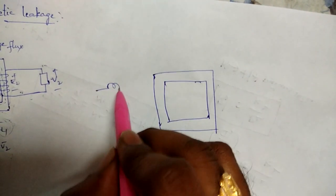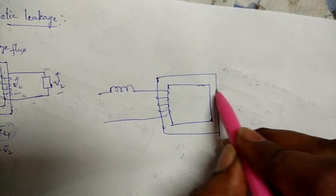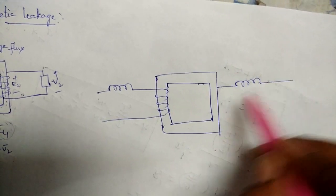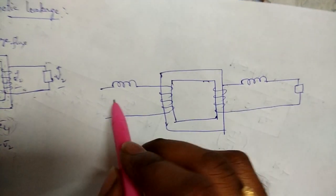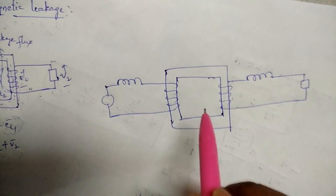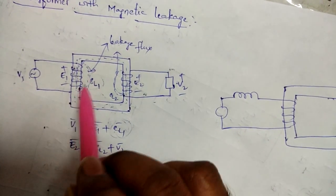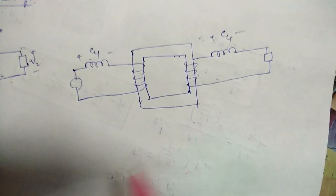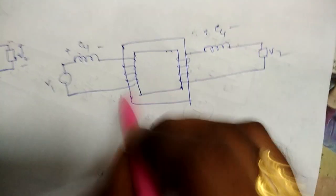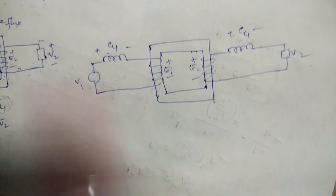In the secondary also, we can represent the leakage with an inductance. This circuit is equivalent to the original circuit — the voltage drop due to magnetic leakage equals the voltage drop across this inductance. Here V1 and V2 are the terminal voltages, and E1 and E2 are the induced EMFs. Both circuits are similar.